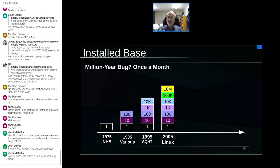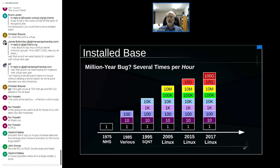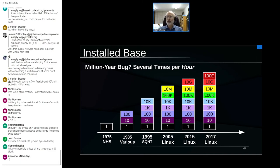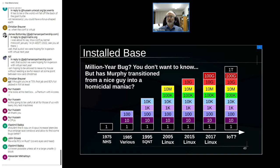At 20 billion instances, that million-year bug is happening several times an hour. If Linux gets even a small fraction of IoT, we could be at a trillion instances — no problem. Has Murphy transitioned from a nice guy in 1975 to a homicidal maniac in 2025? I would feel really bad if my software killed somebody.